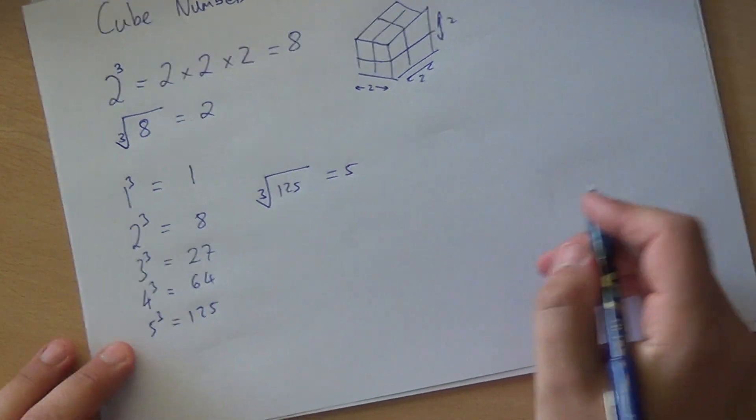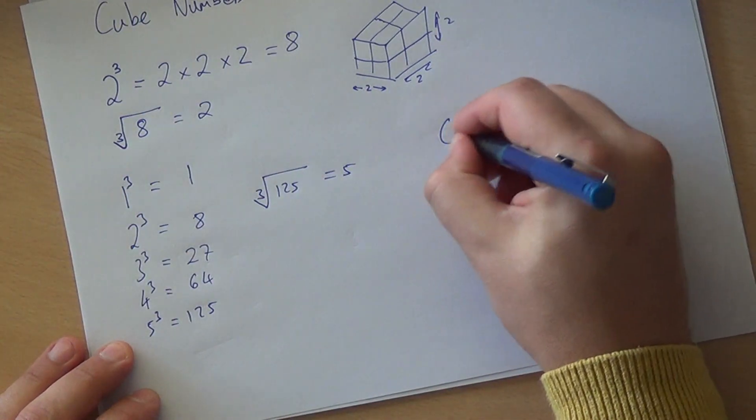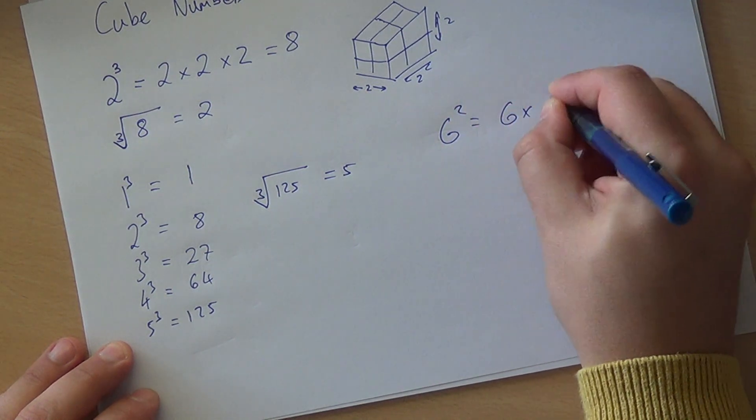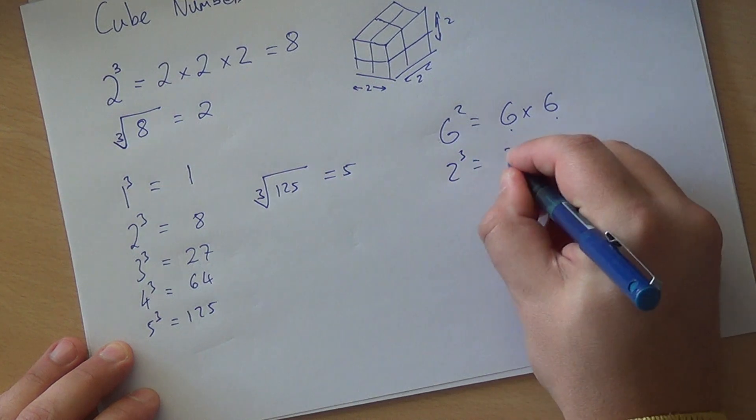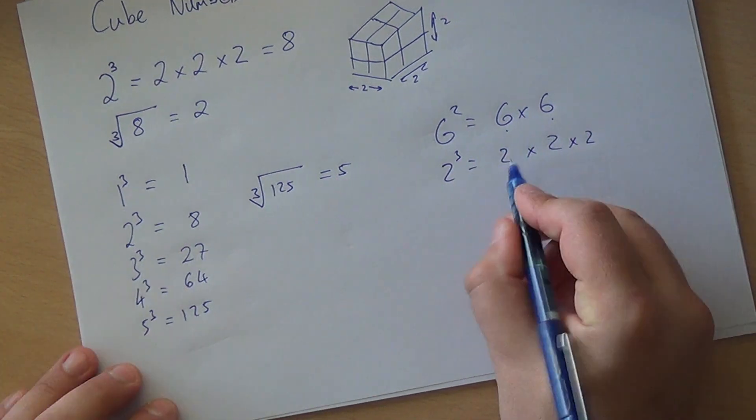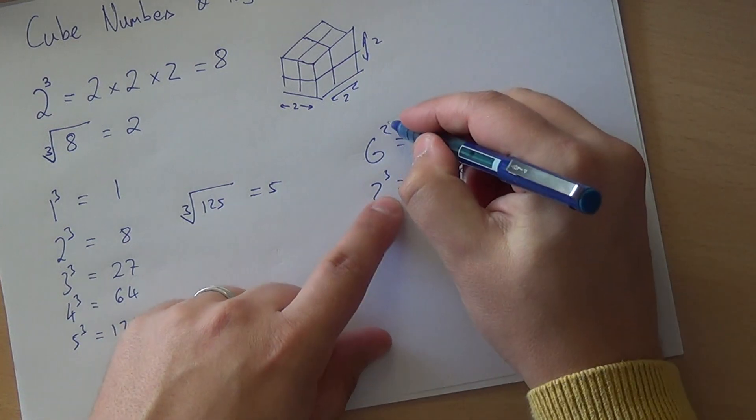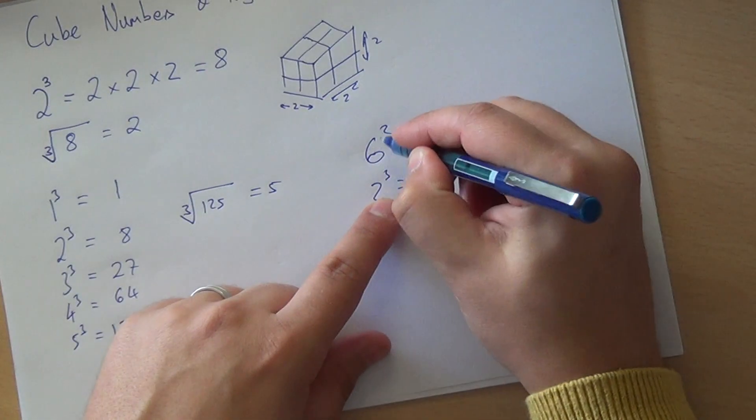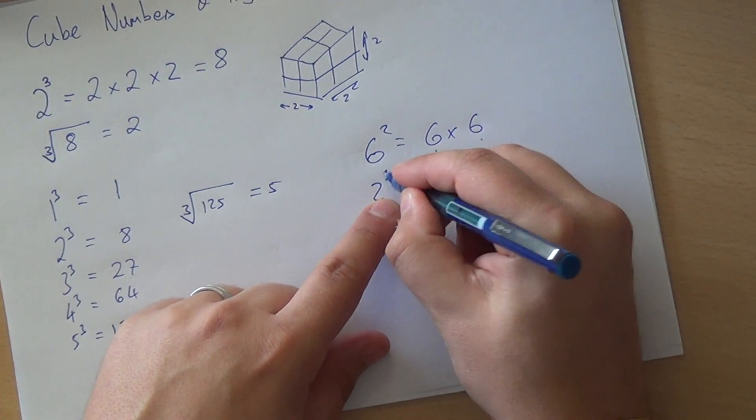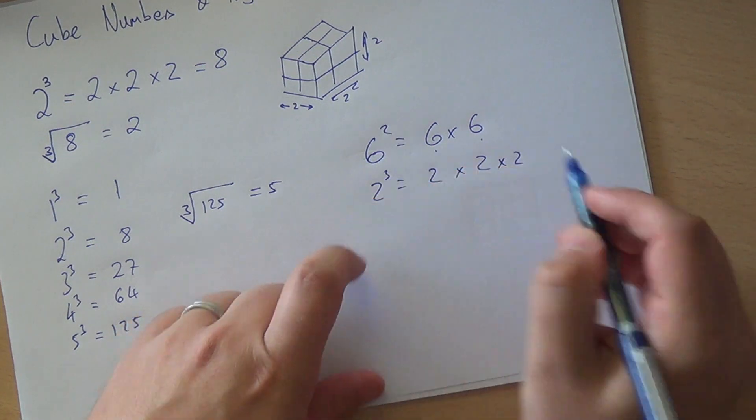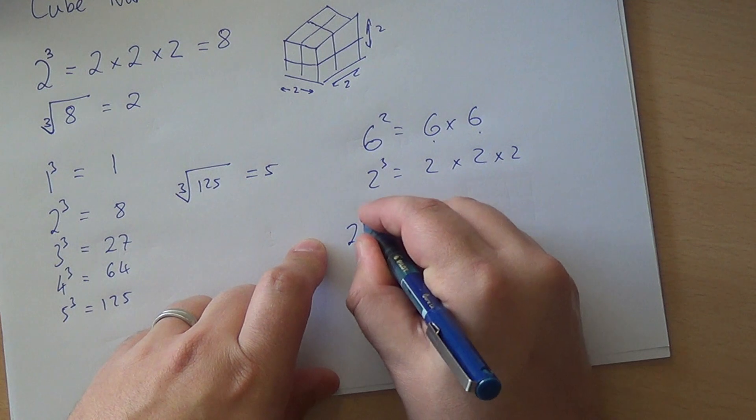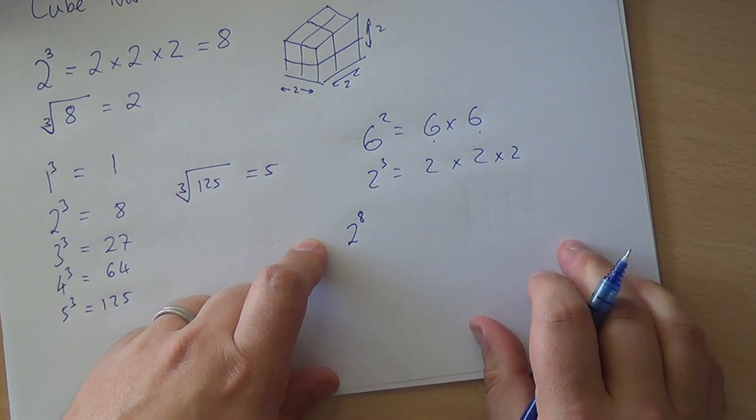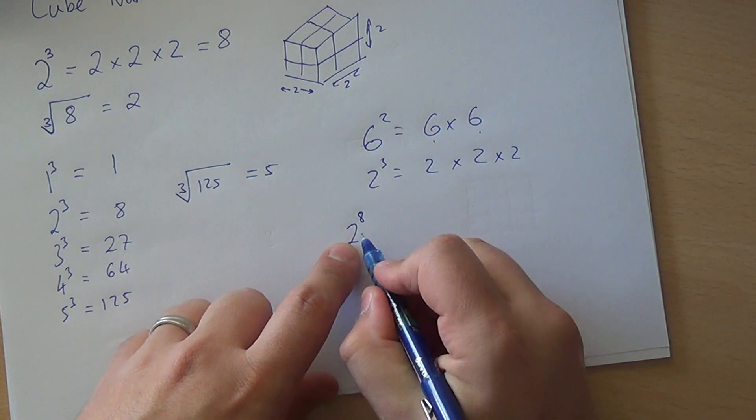Now you can see a pattern here. When we did 6 squared, we had two 6's. When we did 2 cubed, we had three 2's. So this can actually carry on. These things here are called powers or indices. So this is a power of 2, this is a power of 3, or the index is 2, the index is 3. These can carry on. So 2 to the 8 is a thing we can work out. It hasn't got a nice name like square or cube, but it's 2 to the power of 8.